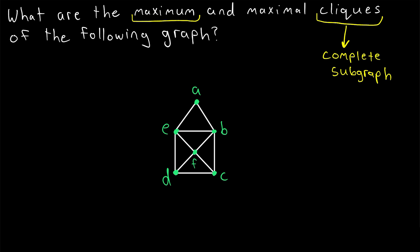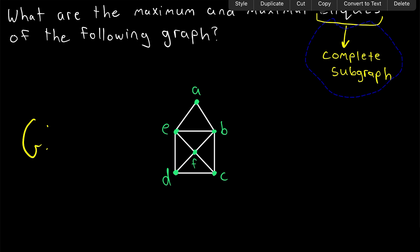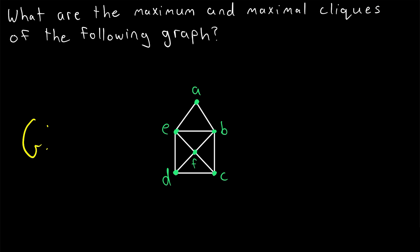A maximum clique in a graph G is a clique with as many or more vertices than any other clique in the graph. Whereas a maximal clique in a graph G is a clique that's not a proper subgraph of another clique in G. So a maximal clique is a clique that may or may not be the biggest clique in the graph, but it's not part of a bigger clique. Don't worry if you didn't quite understand all of those quick explanations, because the example will help.